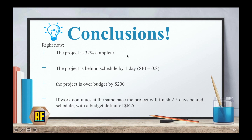Let's conclude. Right now, our project is 32% complete and behind schedule by approximately one day, with an SPI of 0.8. We are over budget by $200. If all continues at the same pace, the project will finish 2.5 days behind schedule with a budget deficit of $625. This was an example of a project where we calculated EV, PV, and AC ourselves and generated the necessary information from those numbers. As you can see, our project is going very badly, so stay with us as we continue our series on project management.